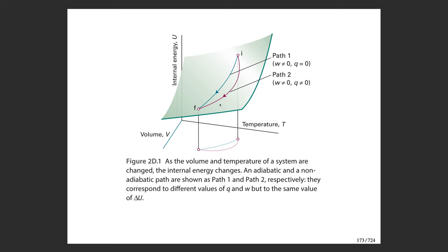Path one corresponds to an adiabatic path where there's no heat exchanged during the process, so the heat is zero. Because you're expanding the system — going from a smaller volume to a larger volume — there's some work being done. If you take the other path, which is non-adiabatic, meaning heat is exchanged, then the heat won't be zero and the work will be somewhat different. No matter which path you take, the change in internal energy is always the same, but the path functions vary.